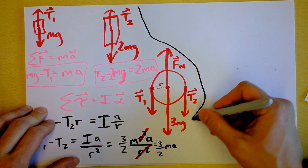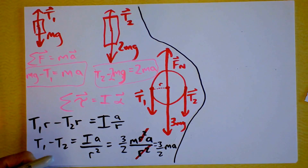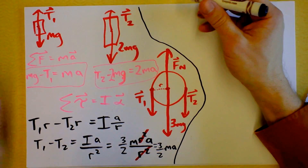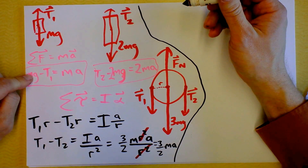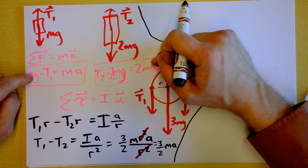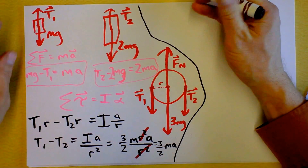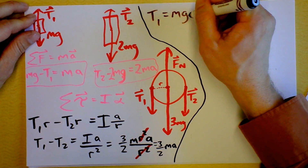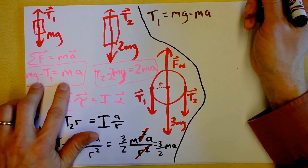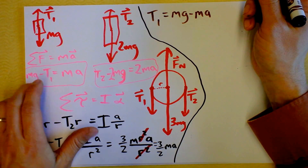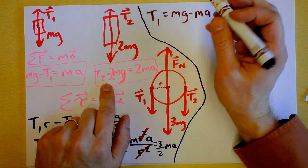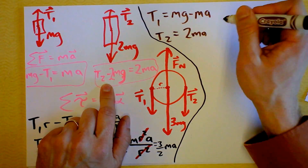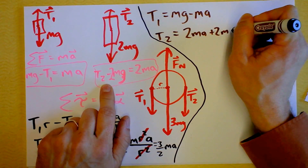Now it's time for a bit of algebra. I'm going to scoot our setup out of the way. I'm going to take the first equation and solve it for T1, and take the second equation and solve it for T2, then plug both into this third equation. Watch: T1 equals Mg minus Ma. And then solving for T2: T2 equals 2Ma plus 2Mg.